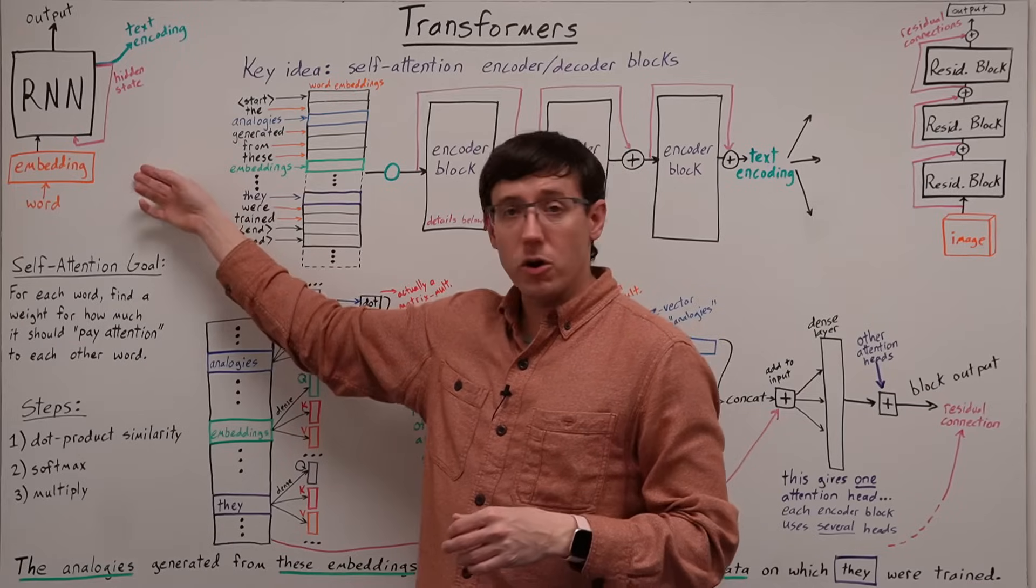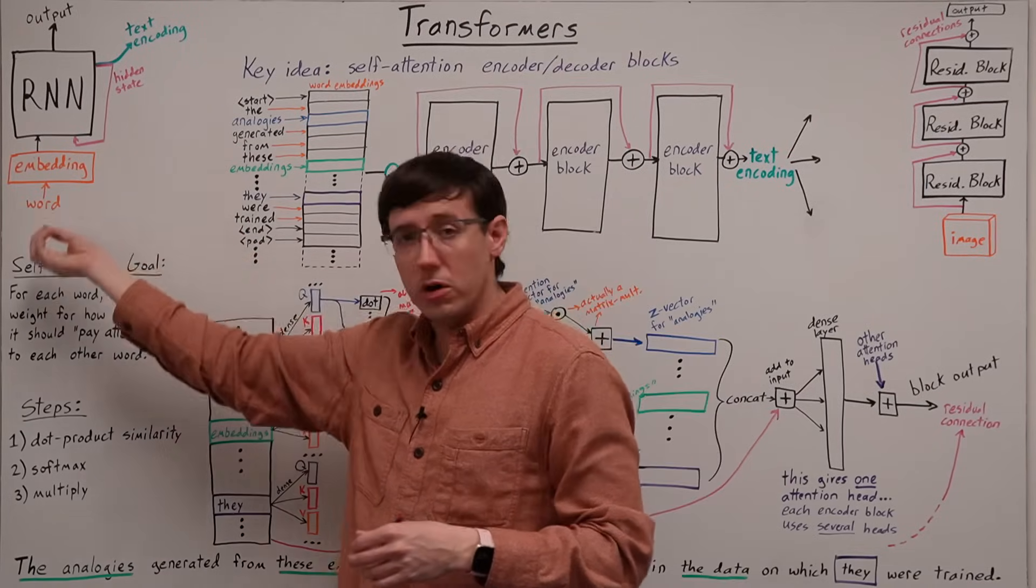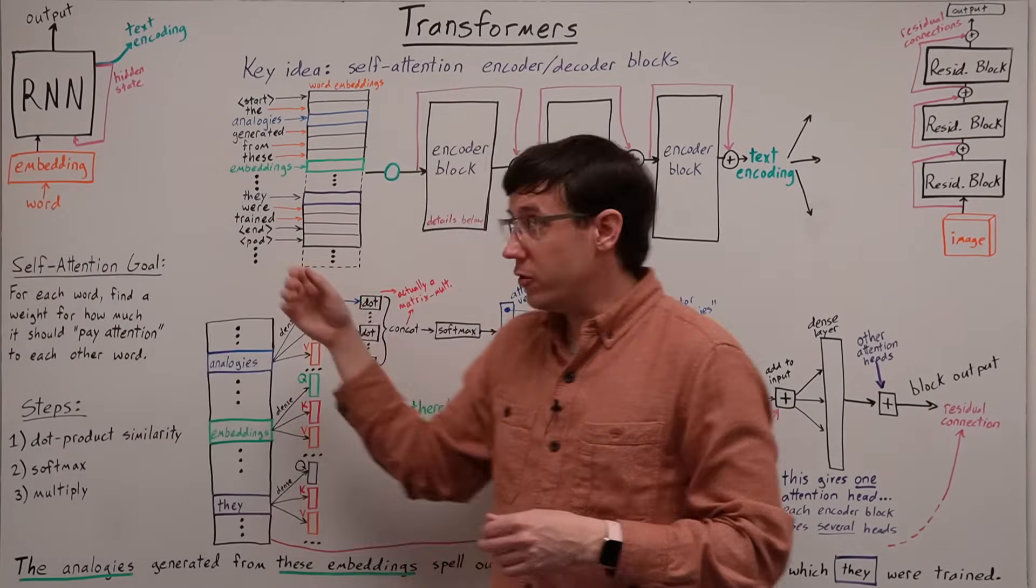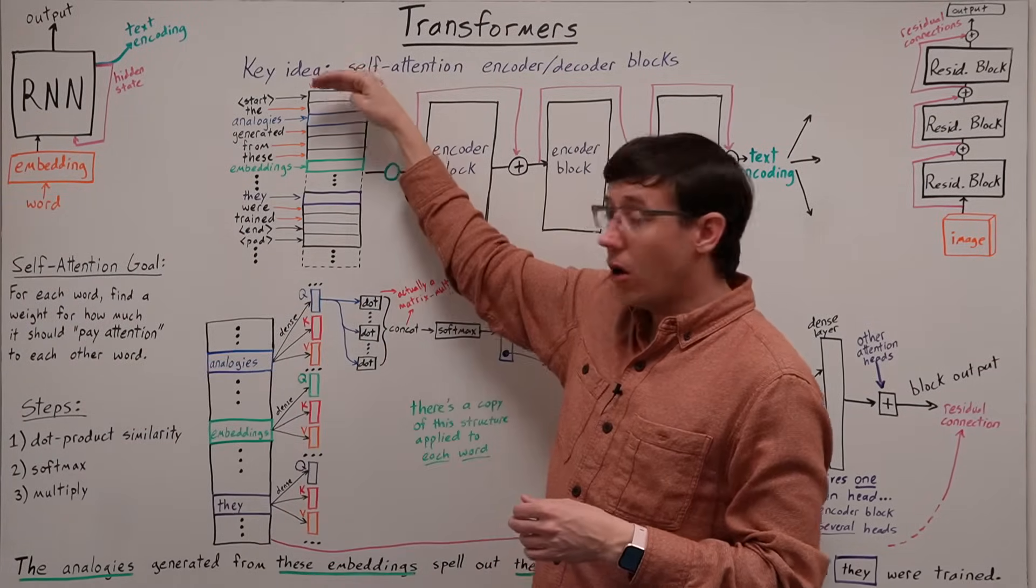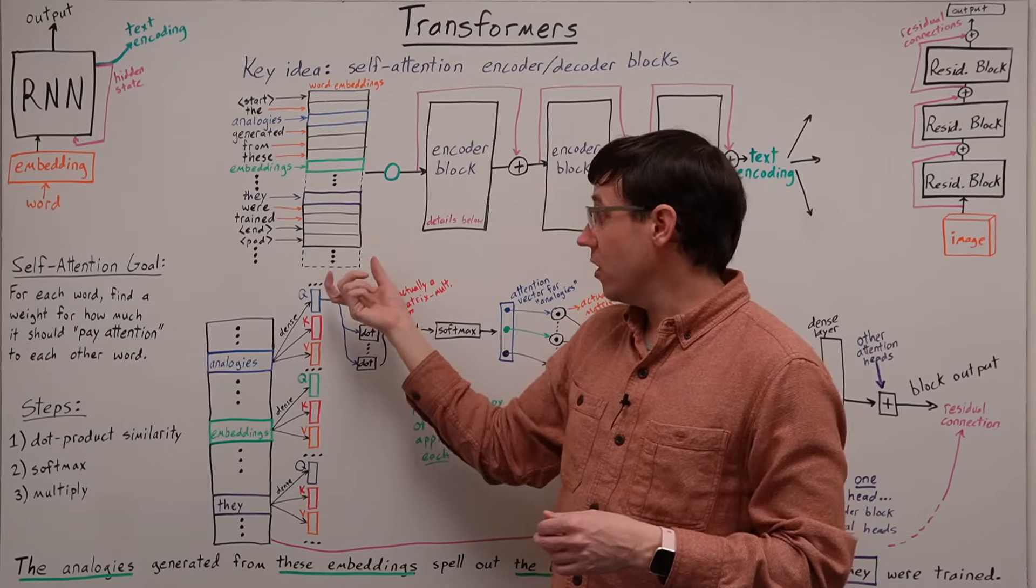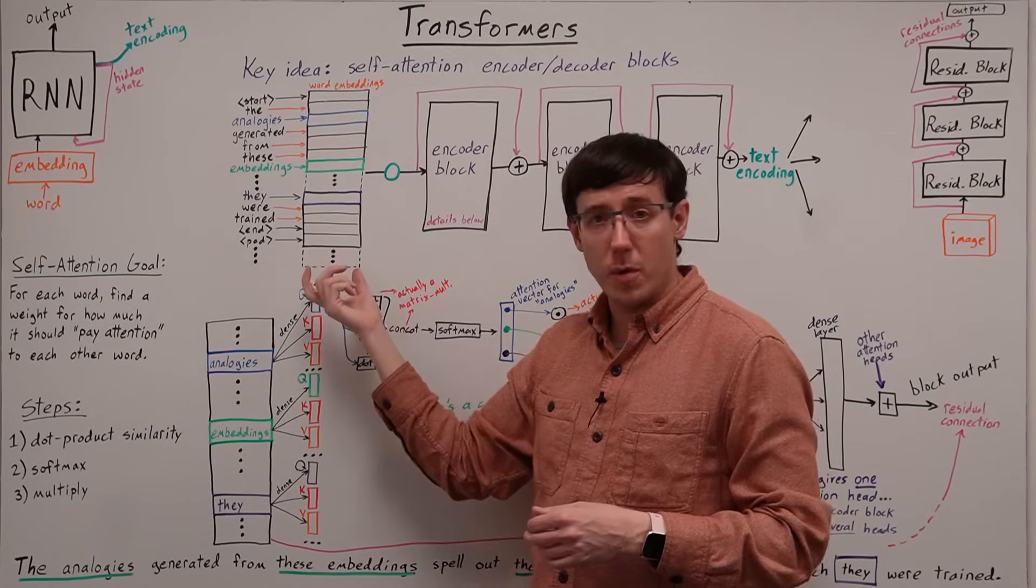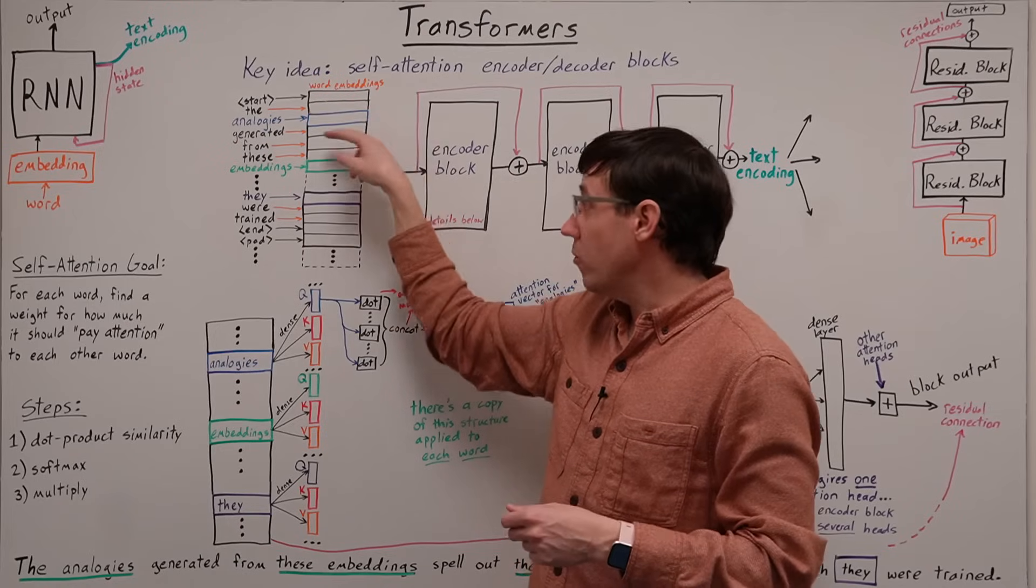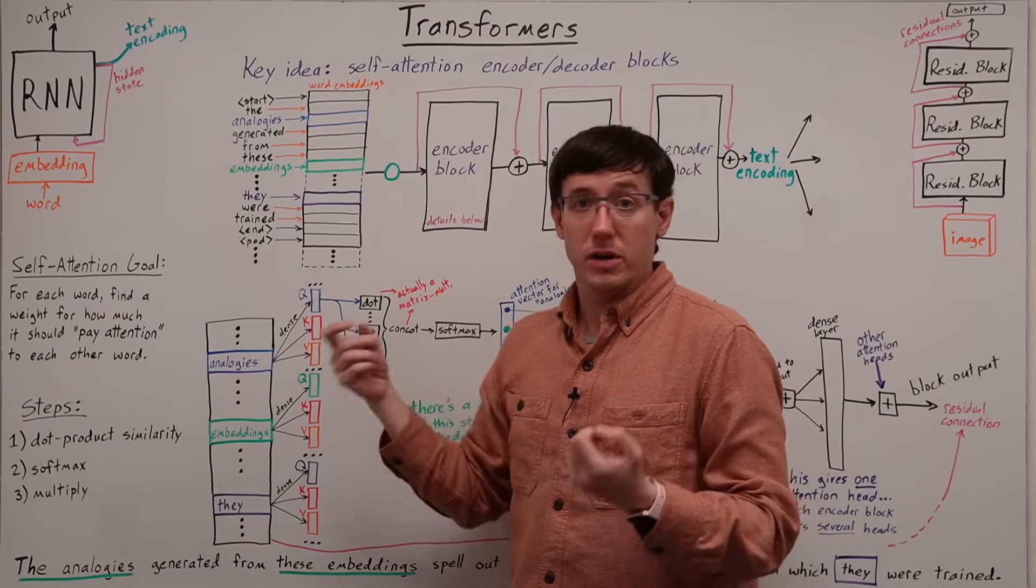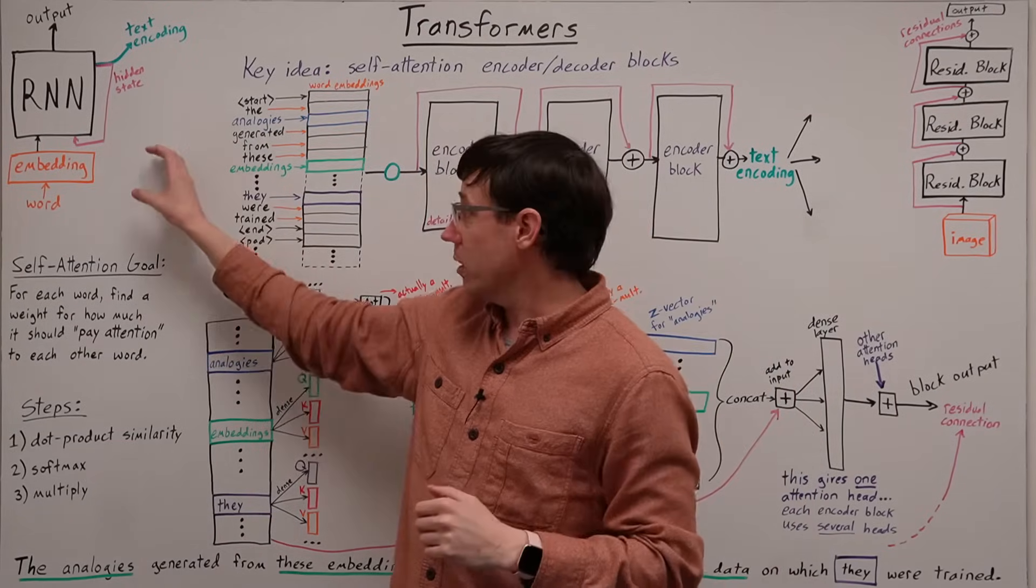But unlike a recurrent network that receives words one at a time, a transformer receives all of the embeddings for an entire document concatenated together into a matrix, where every row is the embedding of a different word.